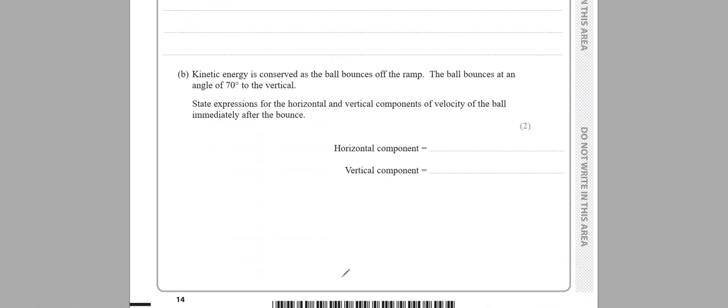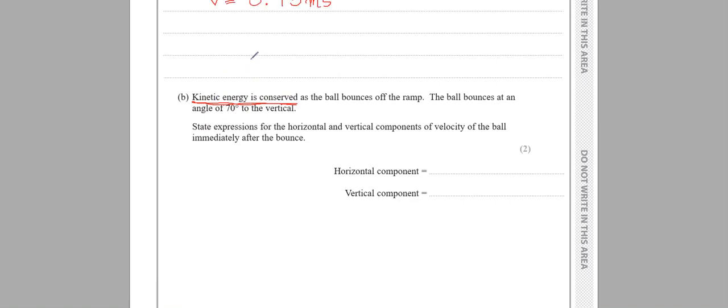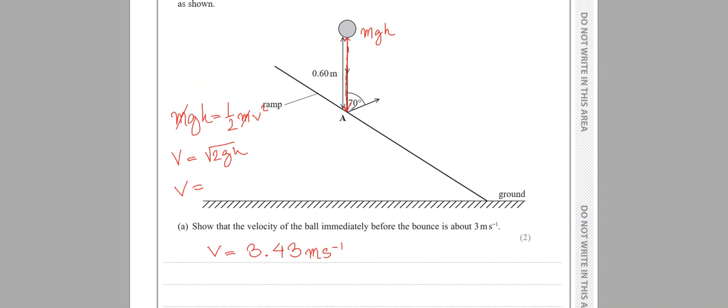The kinetic energy is conserved as the ball bounces off the ramp at an angle of 70 degrees to the vertical. Since kinetic energy is conserved and the ball has the same mass, the velocity remains the same. The value of velocity after the bounce is 3.43 meters per second.